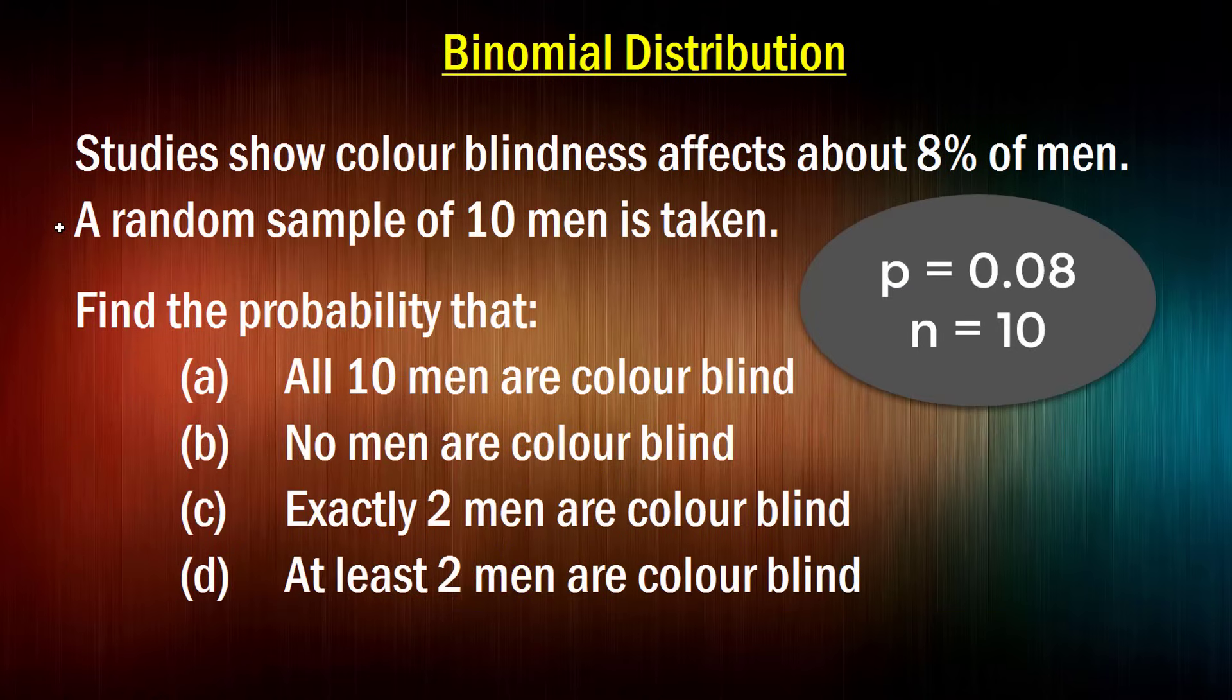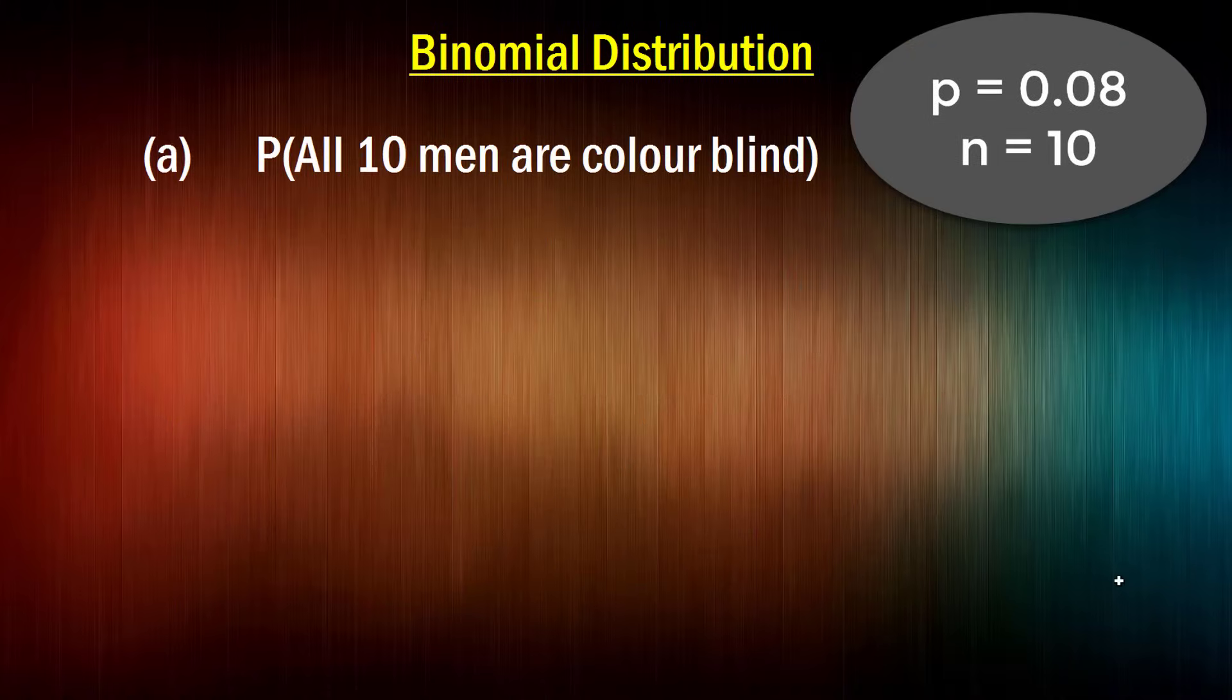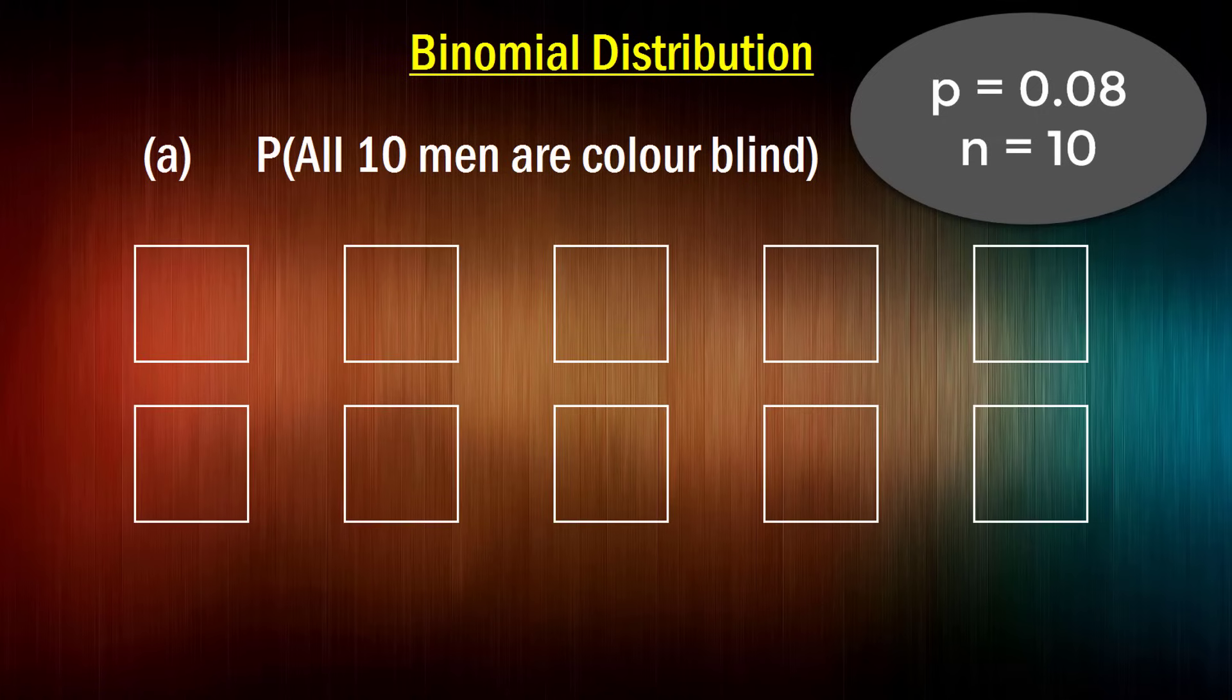Now, we're going to learn by doing in this example. So I've got four questions for you straight up. Knowing that this is a binomial distribution where the parameter P is 0.08 and the n is 10, I'm going to ask you to find the probability that all 10 men are colorblind, that no men are colorblind, that exactly two men are colorblind, and at least two men are colorblind. Now, I'm sending you out in the dark here to start with because we haven't really discussed too much about how to calculate this, but I reckon you're going to be able to do the first few even without my help. What's the probability that all 10 men are colorblind? Well, here are our 10 men. For them all to be colorblind, the first one obviously has to be colorblind, and that's got an 8% chance of happening. So 0.08.